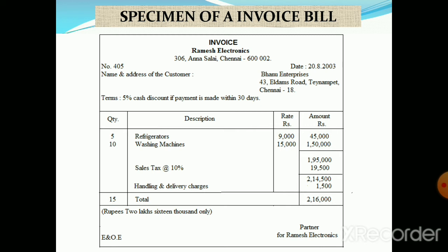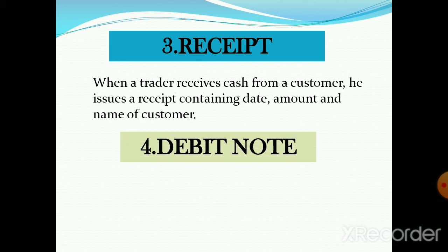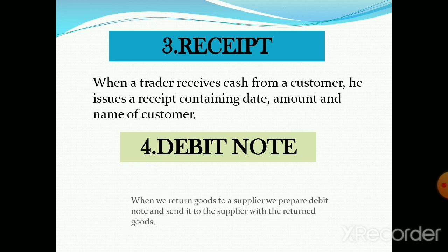Next is receipt. When a trader receives cash from a customer, he issues a receipt containing the date, amount, and name of the customer. The original copy of the receipt is given to the customer, and its duplicate copy is kept with the trader for making records in the books of account. Similarly, when we make payment, we obtain a receipt from the party to whom we make payment.